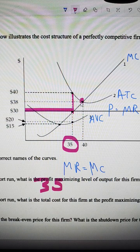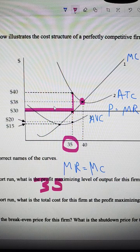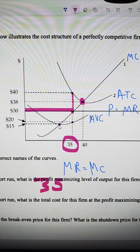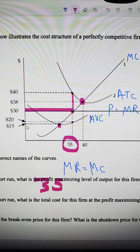The breakeven price would be right here at the minimum of average total cost at 38, and the shutdown price would be down here at 15.